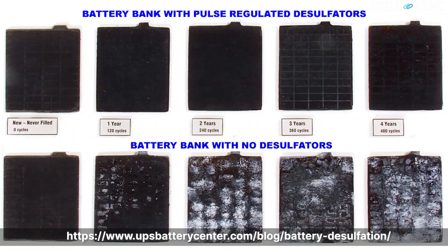Some battery manufacturers include pulse regulators along with the battery. Electric pulses of low power, high frequency, and voltage are applied to the battery terminals. This causes rhythmic resonance of the plates, causing the crystal deposits to split and the sulfate to return to the electrolyte solution.